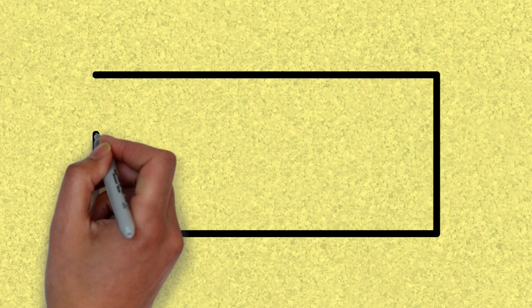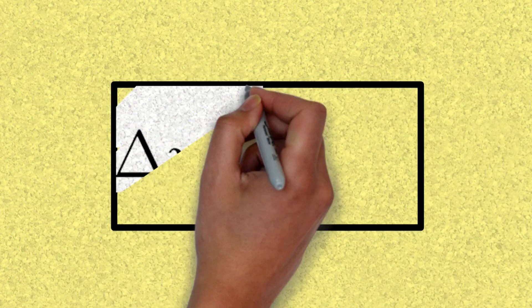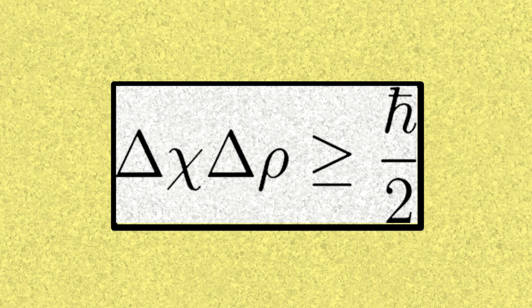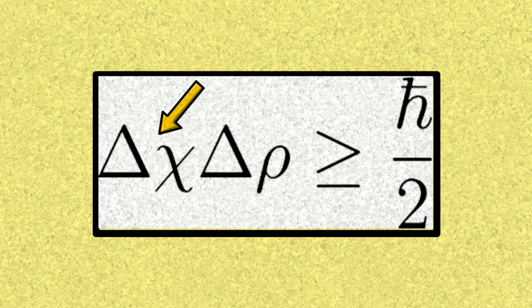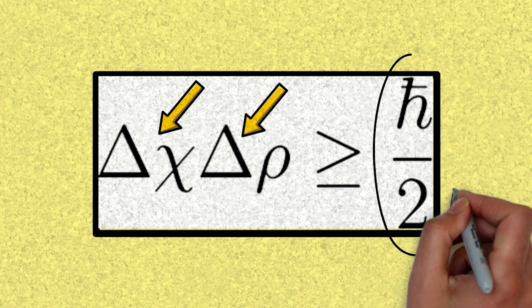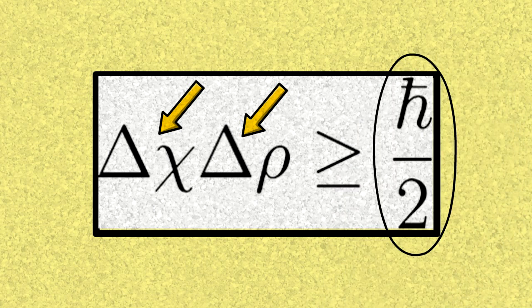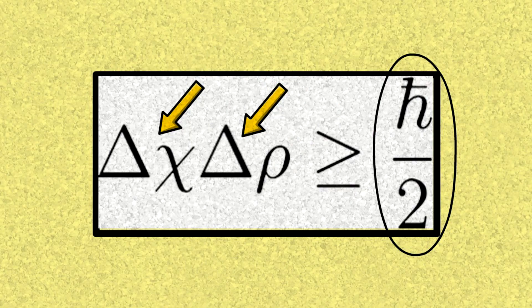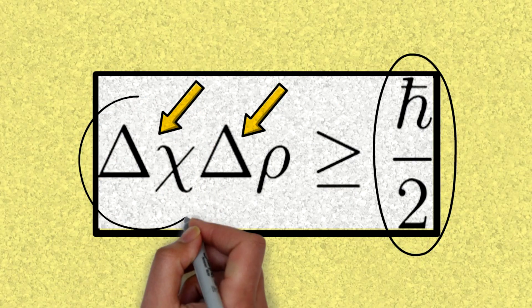The uncertainty principle looks like this: delta x represents the uncertainty in position and delta p is the uncertainty in momentum, and it says that if you multiply the two you get something that is bigger than or equal to a number. Heisenberg's principle basically says there is a trade-off — the more you know about the position, the less you know about the momentum, and vice versa.